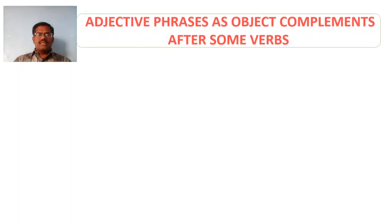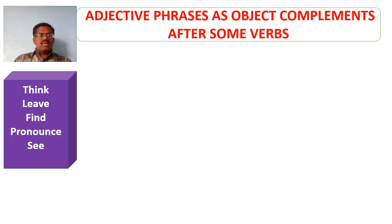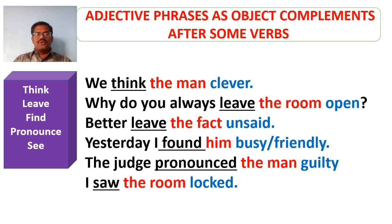Now look at the adjective phrases which can act as object complements after some verbs. The verbs include: think, live, fine, pronounce, see. These verbs are underlined in the sentences and the adjective phrases used as object complements are marked in blue ink. They include: clever, open, upset, busy, friendly, guilty, locked. The objects are marked in red ink.